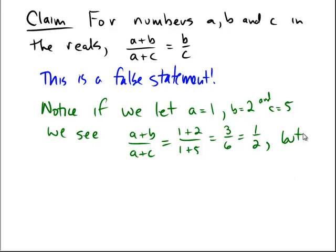But on the other hand, on the right-hand side, B over C would be equal to 2 over 5. However, 1 half, the object on the left-hand side, does not equal 2 over 5.